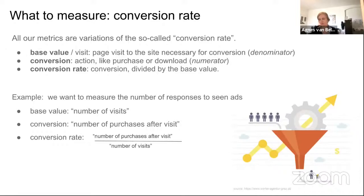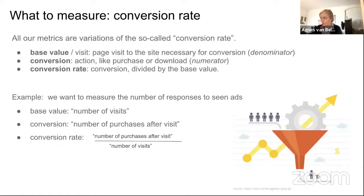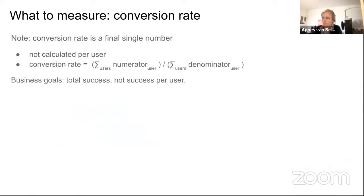It is important to note that the conversion rate is a final single number, not calculated per user. It is the sum of all numerator values for all users divided by the sum of all denominator values for all users. This is done because you are interested in total success overall, not the success normalized per user.